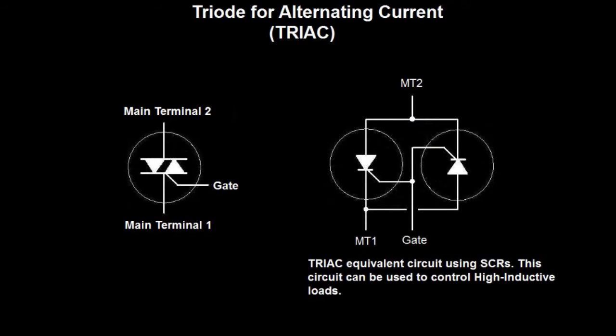Next, we have the triode for alternating current. This is the equivalent to a standard TRIAC using just SCRs. As you can see here, all you're doing is having the polarity of the SCR in two different directions with the common gate connected. This equivalent circuit will work in quadrant two and quadrant four, and this circuit can be used to control high inductive loads.